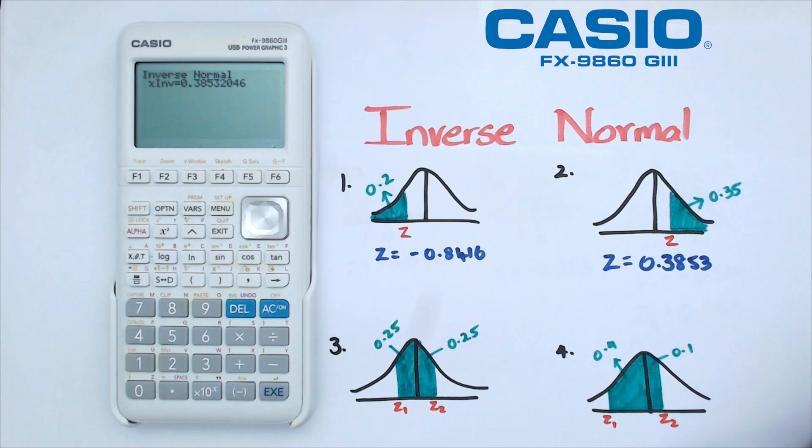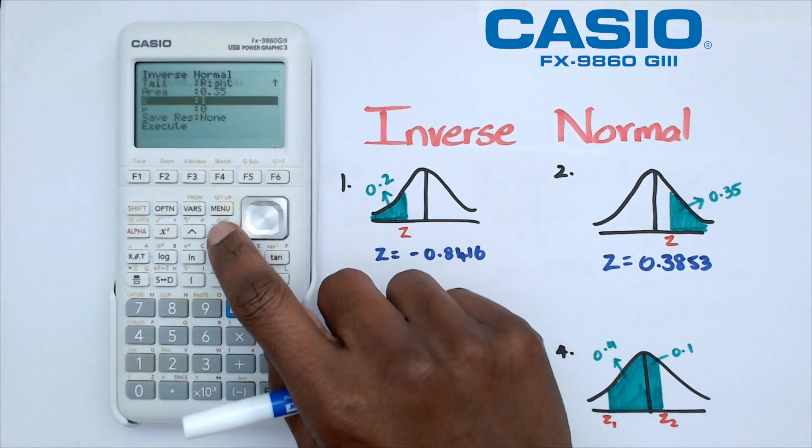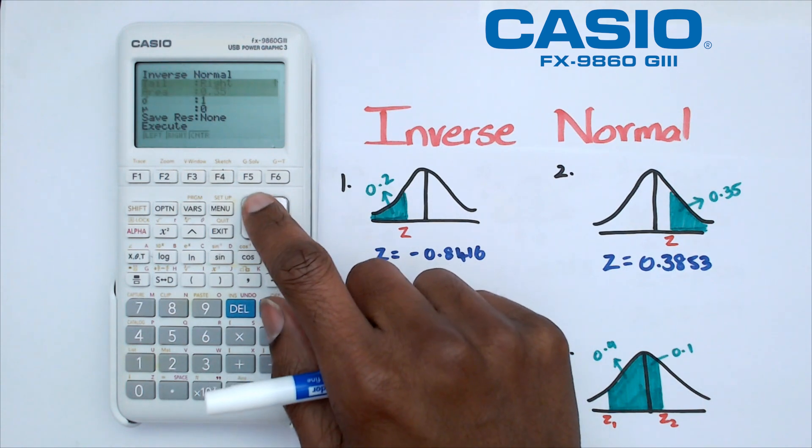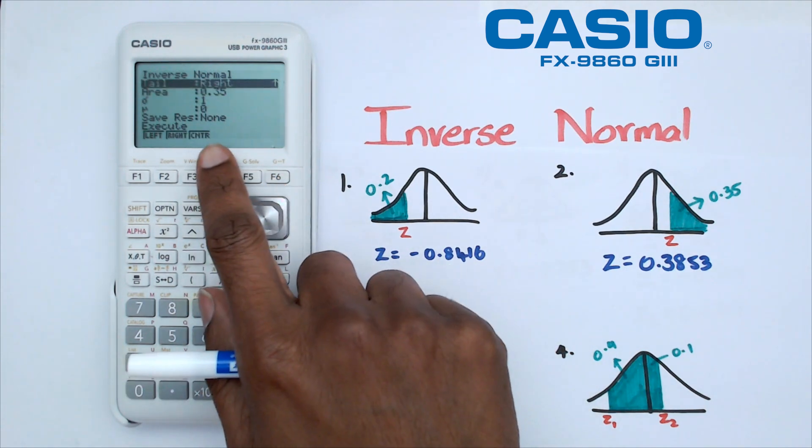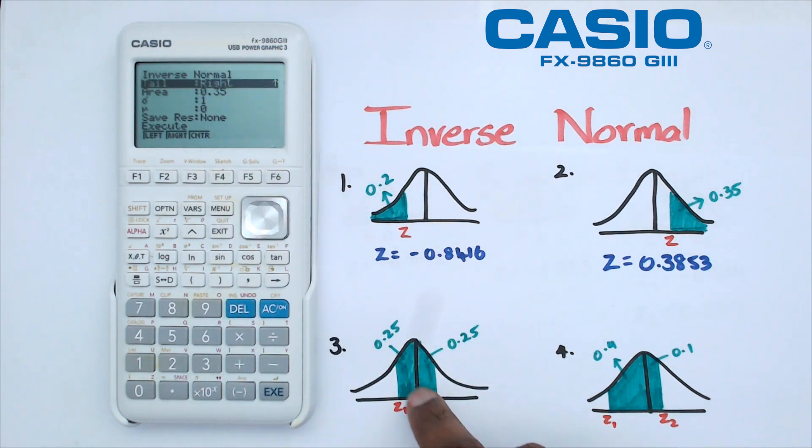Looking at question number 3, we've actually got 0.5 as the area and it's symmetrical. That means we've actually got 0.25 on the right-hand side and 0.25 on the left-hand side. The way we're going to do this one is to go back to the inverse normal menu where it says tail. We're going to change from right to center, and to do that we've got F3.